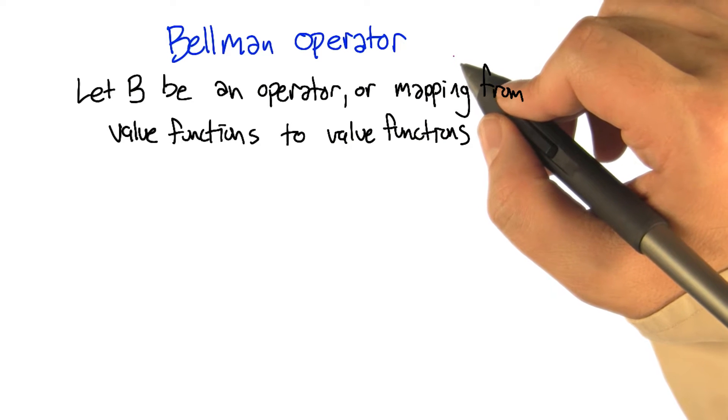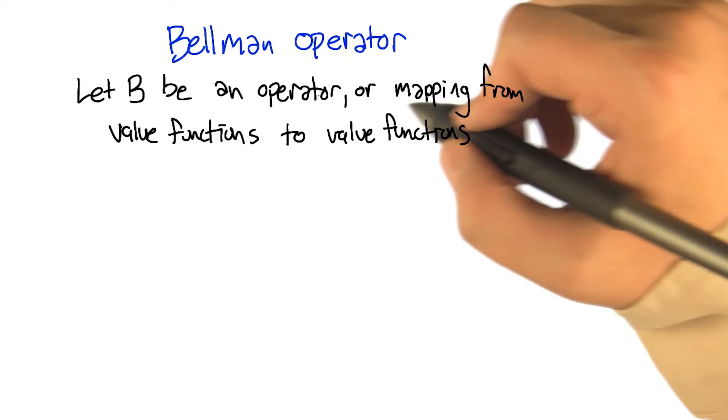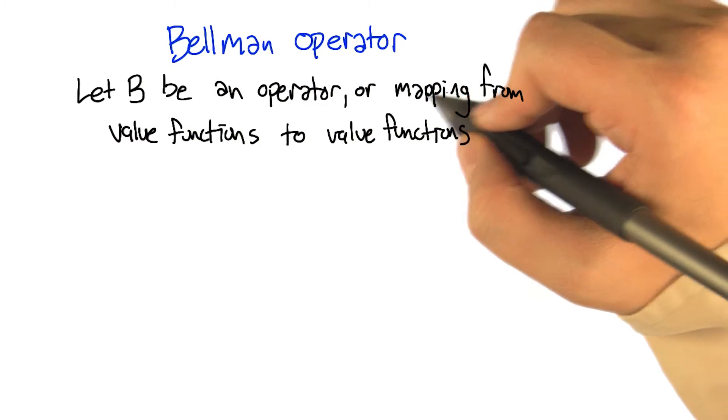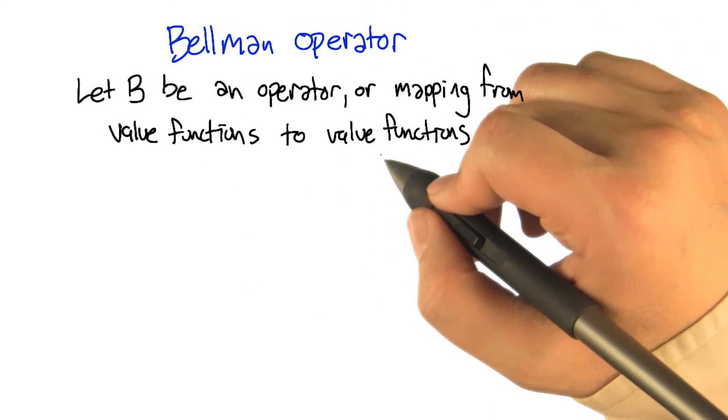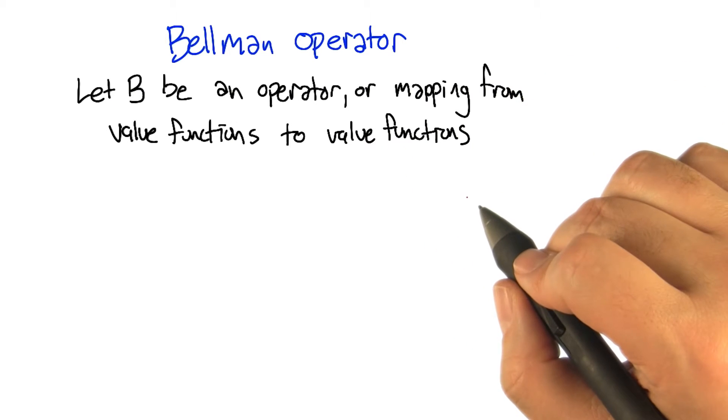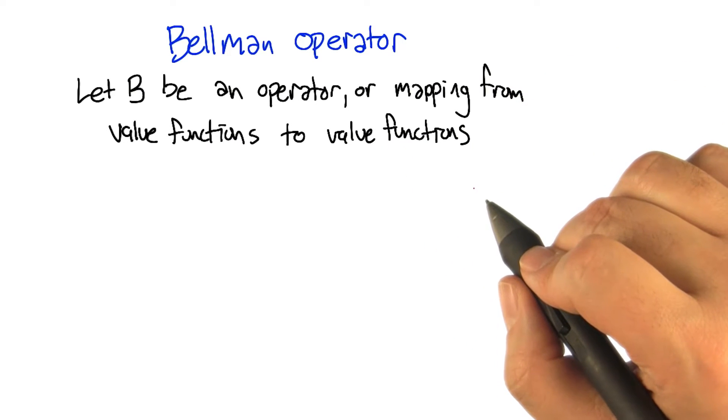So Bellman operator is going to be a mapping, a transformation from value functions to value functions. You give me a Q function, the Bellman operator will give you back possibly a different Q function. Okay, so it's a function from Q functions to Q functions.